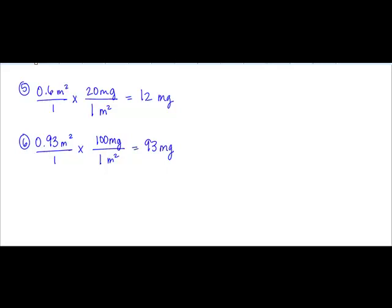Now number seven is very similar. Seven says a child's BSA is 1.1 square meters. And if a prescribed drug is ordered at 45 milligrams per square meter, how many milligrams would this child receive? So anytime you have BSA, go ahead and start with that first and then use the doctor's order.